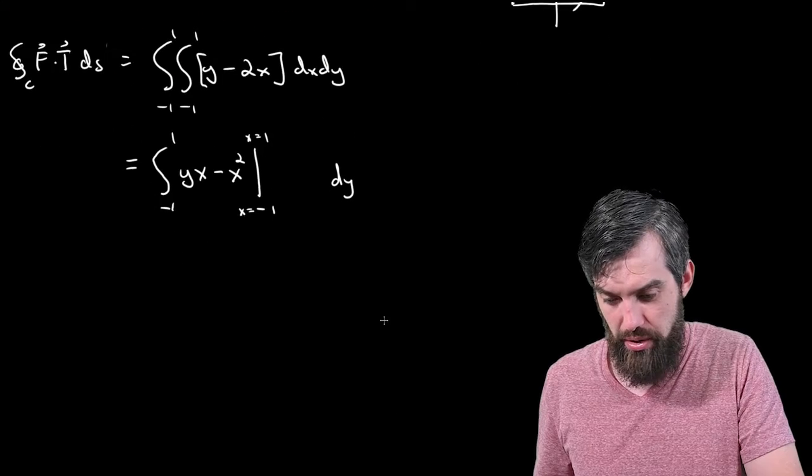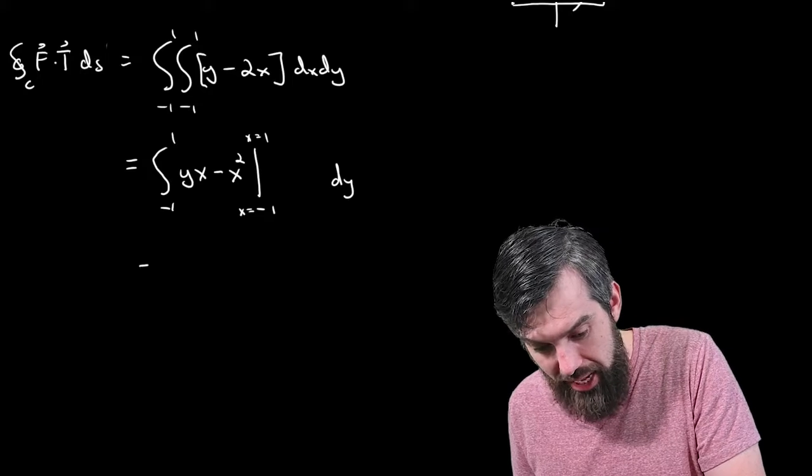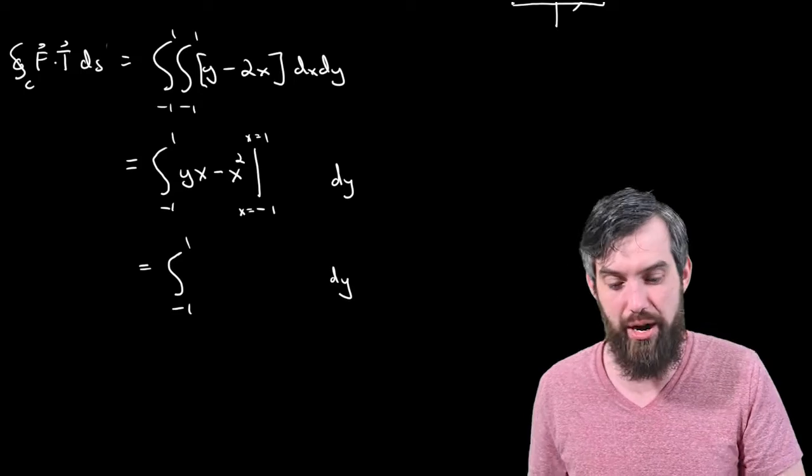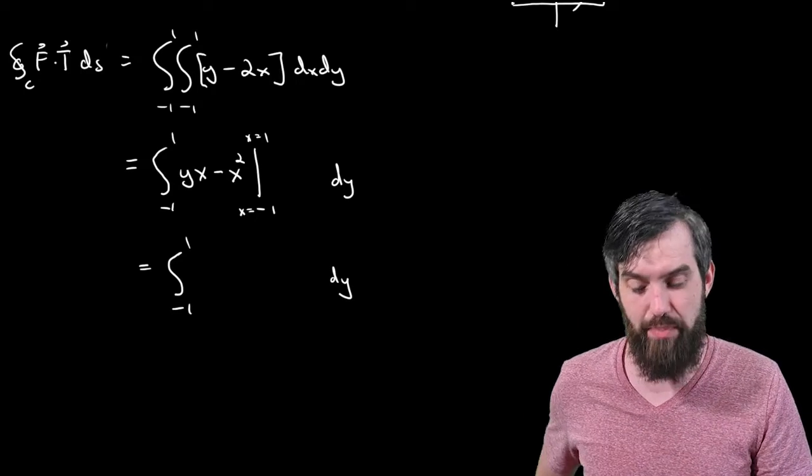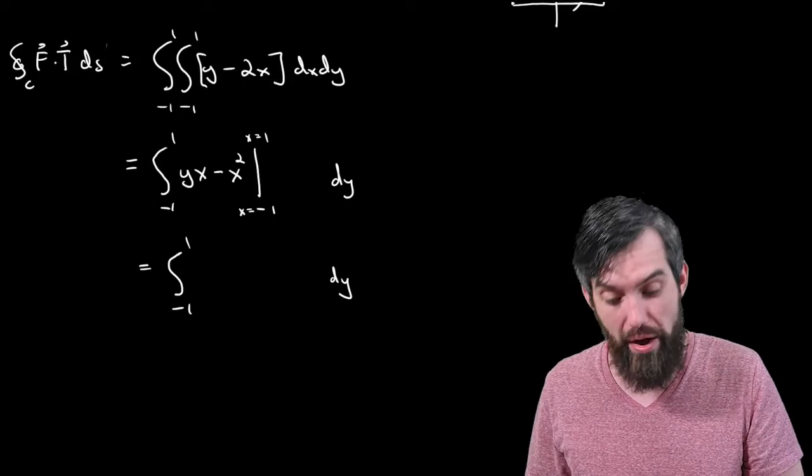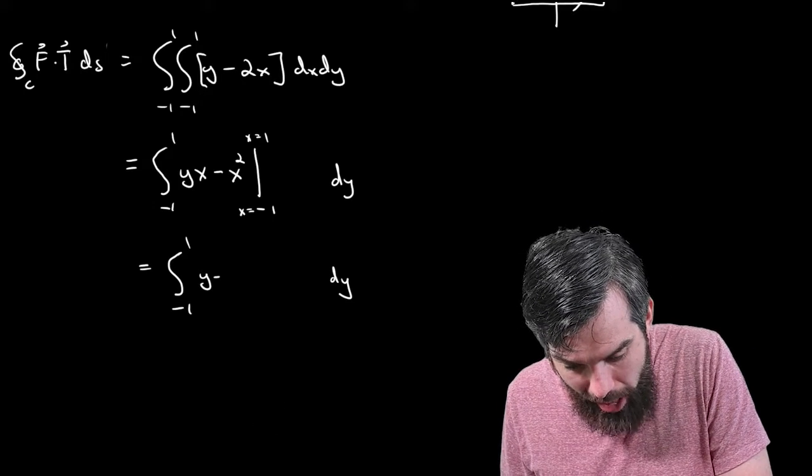Okay, so we can do this. I'm going to plug in the values. It's going to be, well, I'll copy and paste the minus 1 to 1 and the dy, nothing's changed there. But evaluating the inside, I had to plug it in at 1, and x equal to minus 1 as well. Plugging into 1 first leaves me with y minus 1. And then plugging in minus 1 gives me a value of y times minus 1, which is minus y. And then minus, minus 1 squared, so then minus 1.